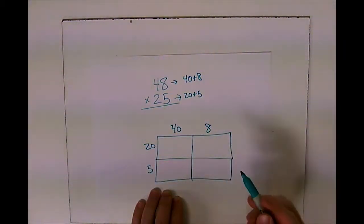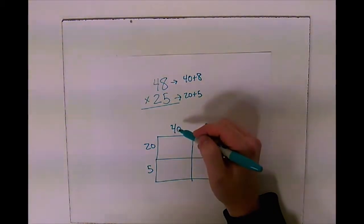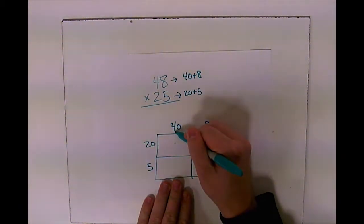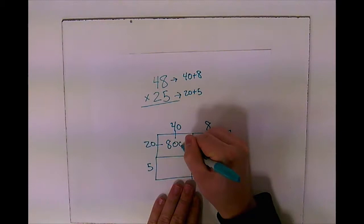Now I'm just going to multiply what is above and to the side of the boxes. So this box, I have my 40 and I have my 20. 4 times 2 is 8, and I'm going to add my zeros, so it should be 800.